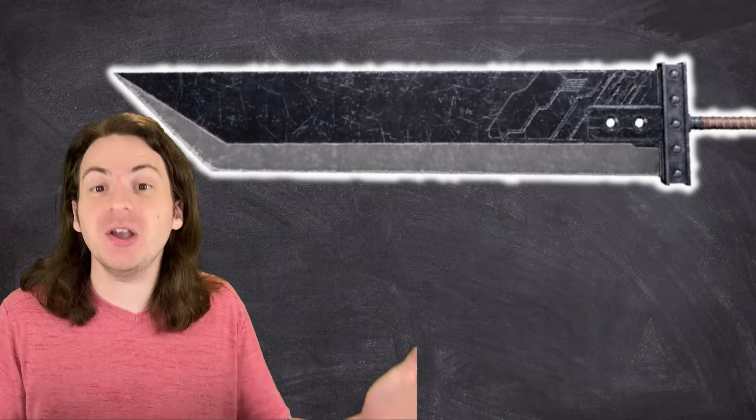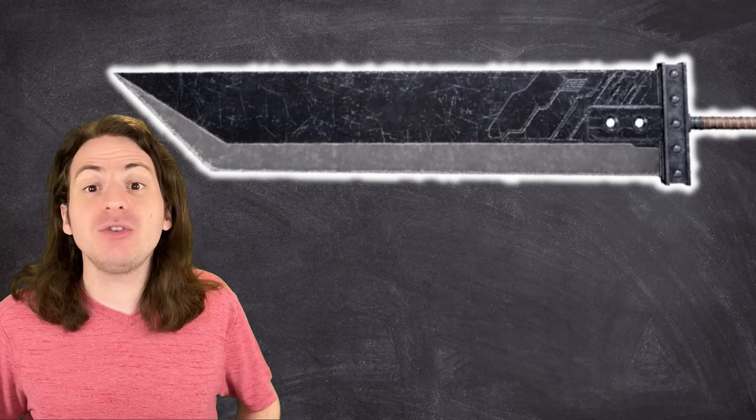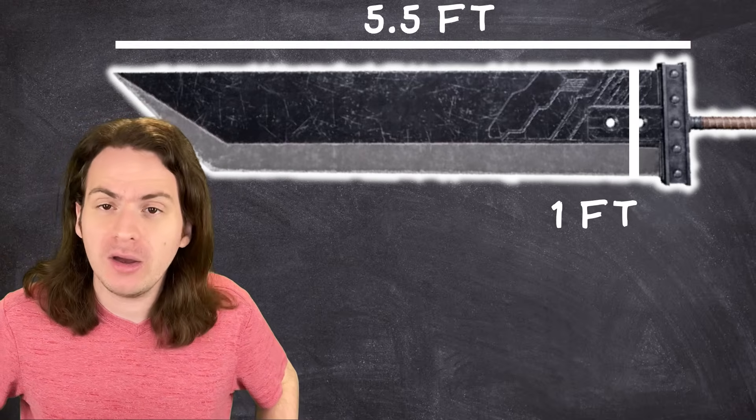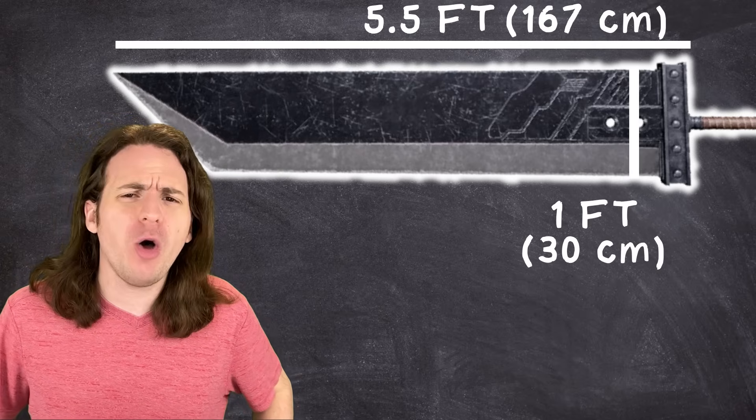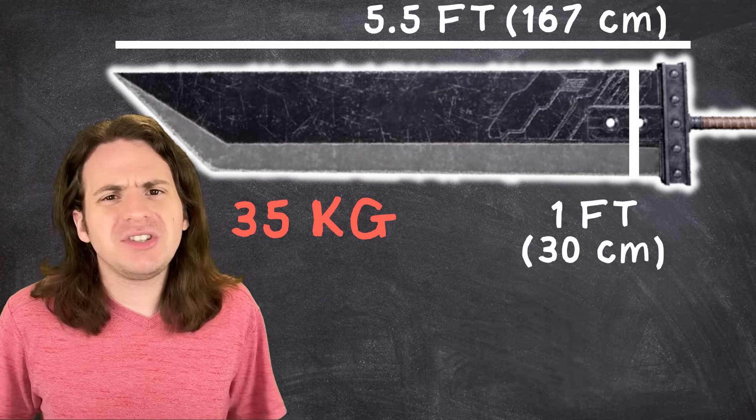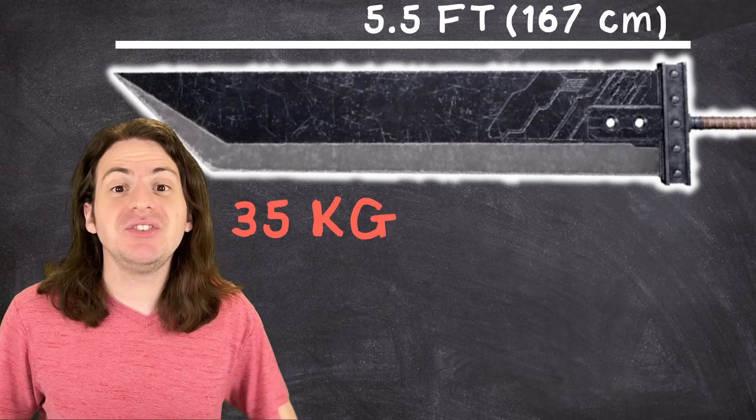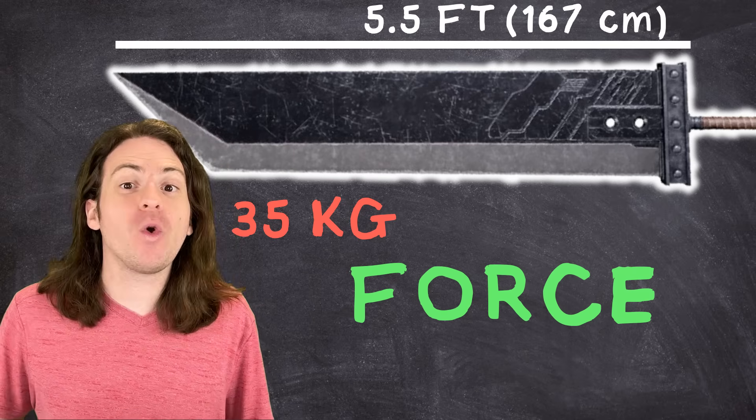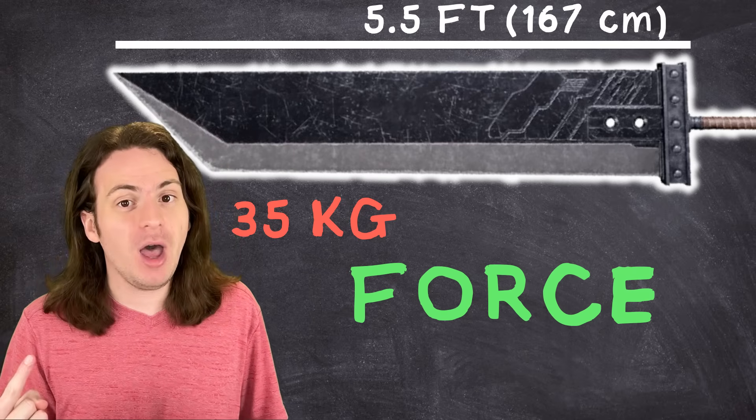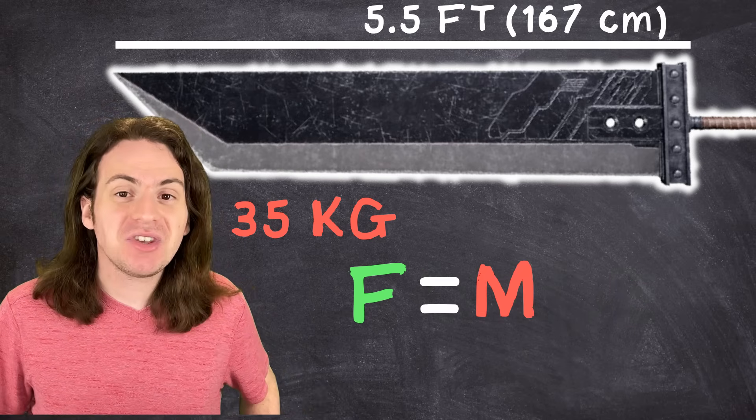If you're holding a long, heavy sword out in front of you, gravity is going to try and pull that blade down, which will create a moment. In order to keep the blade up, you have to not only counteract the downward force but also the rotational force. So say we wanted to calculate the moment of Cloud's buster sword. According to online sources, the blade of this sword is about one foot wide and five and a half feet long, or about 30 by 167 centimeters, and weighs somewhere in the ballpark of 35 kilograms. Hard to say without knowing exactly what it's made out of, but we'll go with it. The first thing we want to find is the force that gravity is exerting on it, so that we know how much force you need to keep it up. That's relatively simple. Remember, force is equal to mass times acceleration.